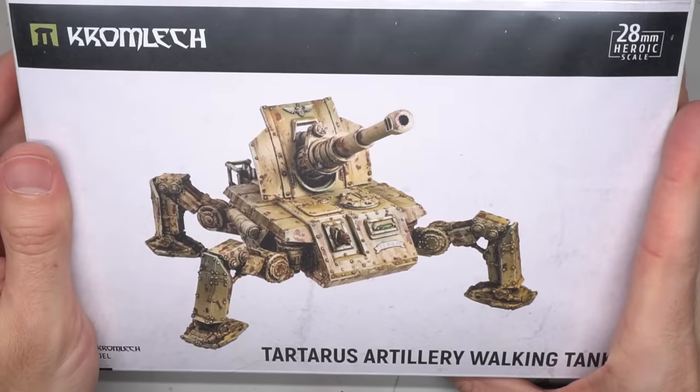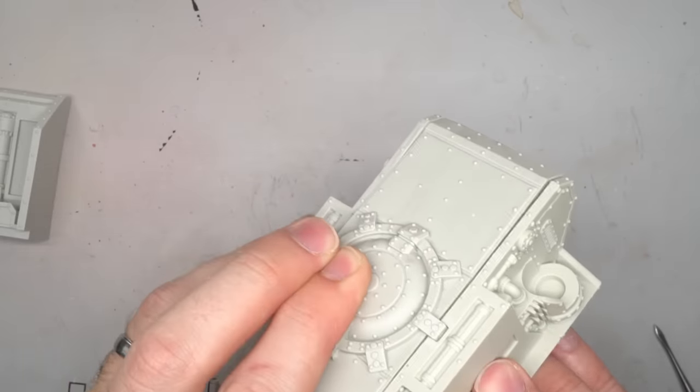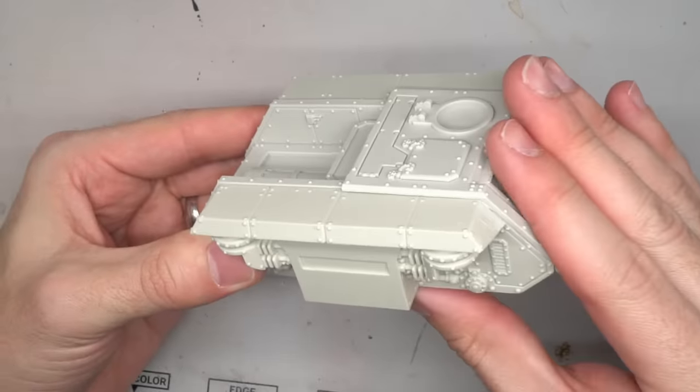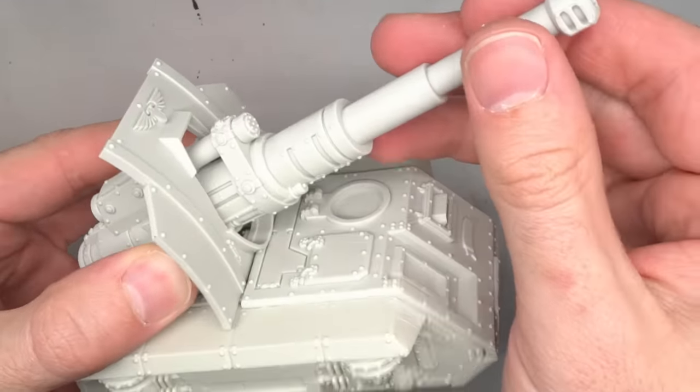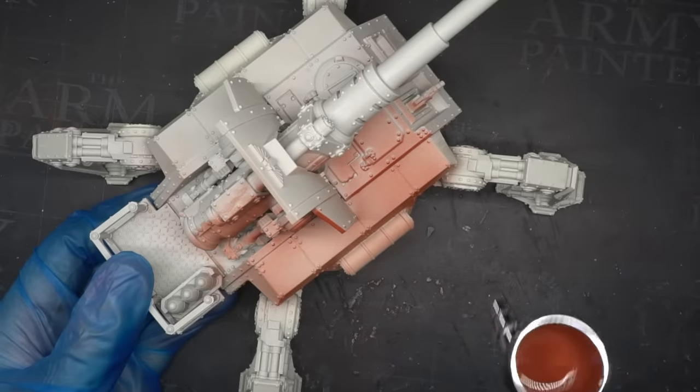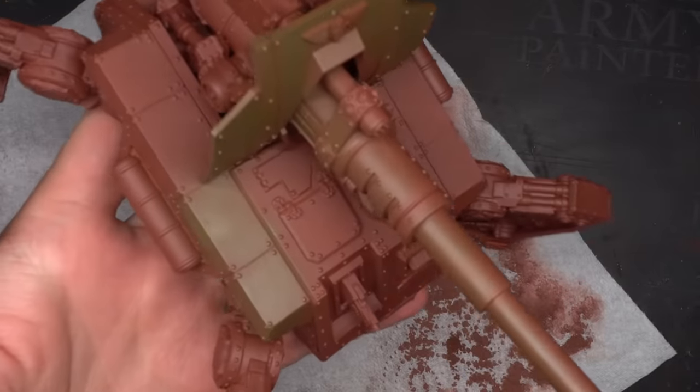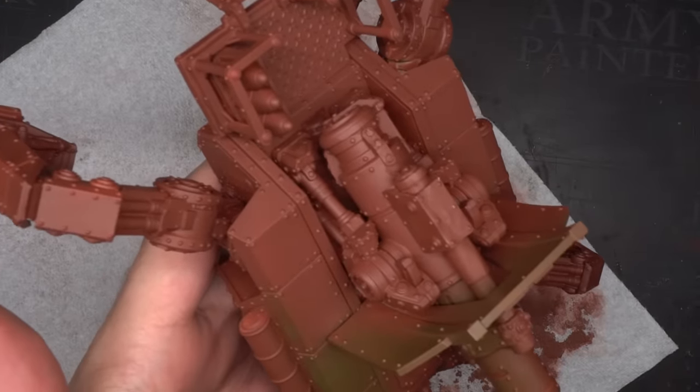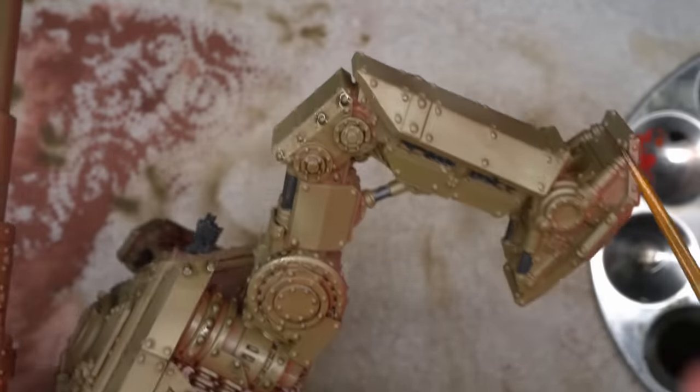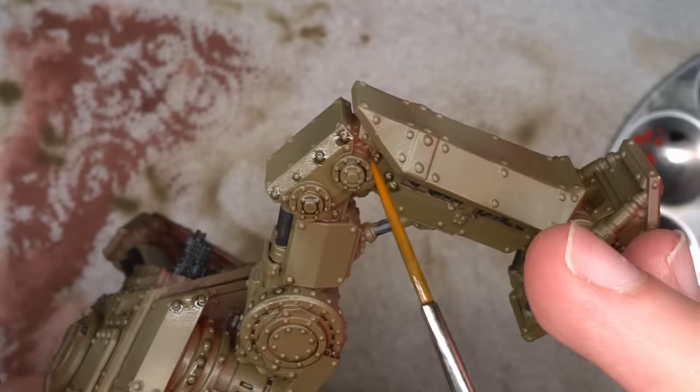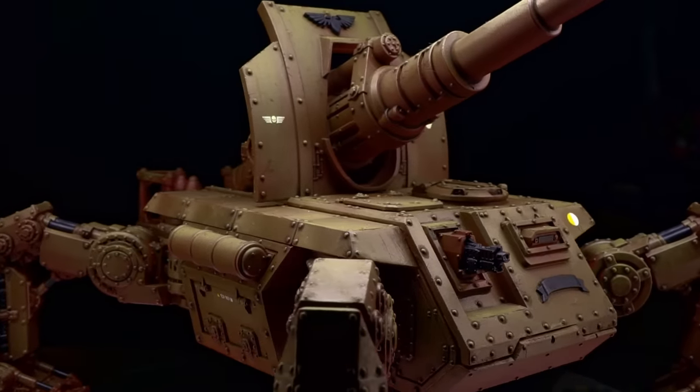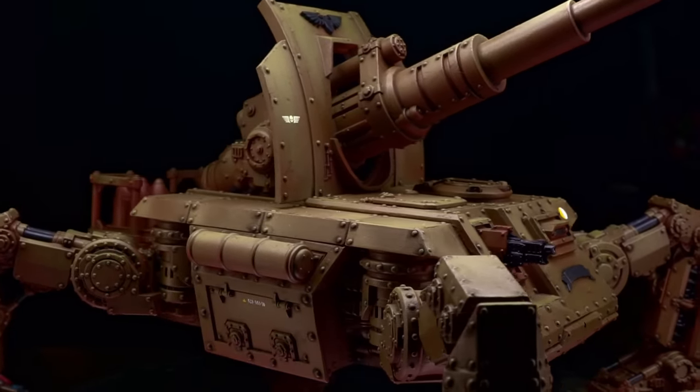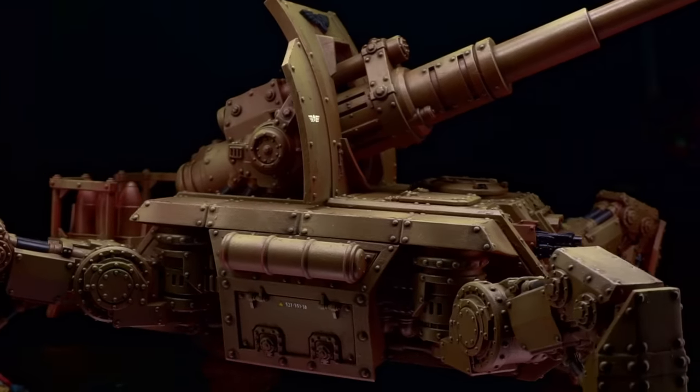But before we wrap up, Kromlech have also released some resin vehicles alongside their Desert Raiders, such as this Tartarus artillery tank. One thing you may notice as I build this model is that it's not equipped with regular tracks or wheels. Its method of locomotion is instead some giant walking legs. It's an incredibly detailed kit and would work exceptionally well alongside your Desert Raider forces. Or if you wanted to use it with other regiments, you could tackle it in a more temperate colour scheme like I have done here. You can find this Tartarus along with three other variants and all the Desert Raiders kits I've used in this video over on the Bits of War website, which I'll include some links to down below.